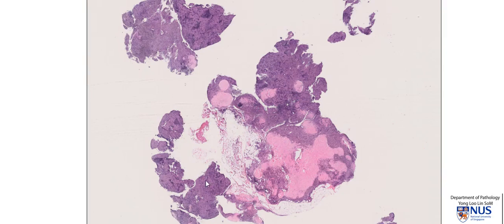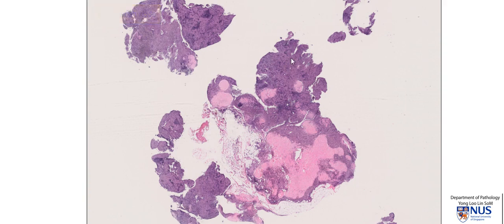Hello, this is a microscopic section taken from a hilar lymph node close to the lung. We don't actually see the nice oval shape of the lymph node or the capsule because it is somewhat fragmented. So these are the areas of lymph node parenchyma.